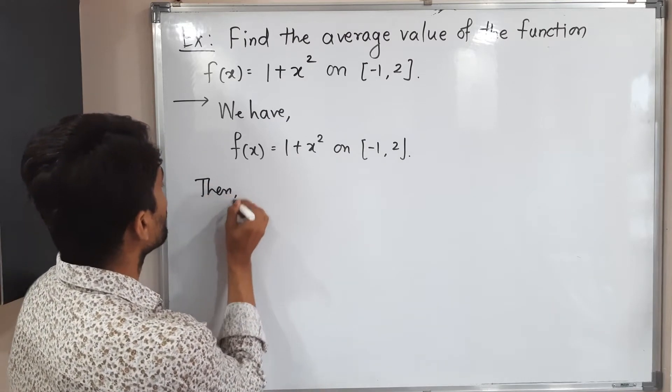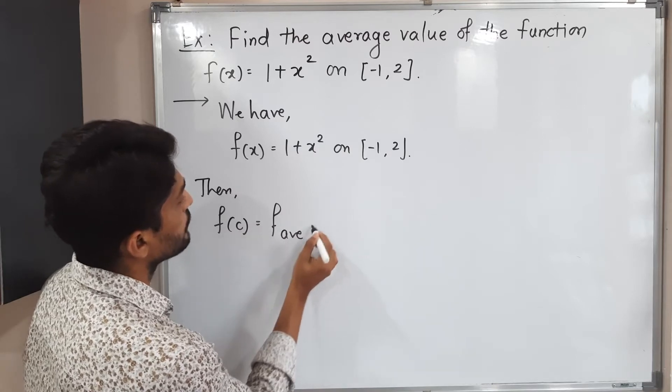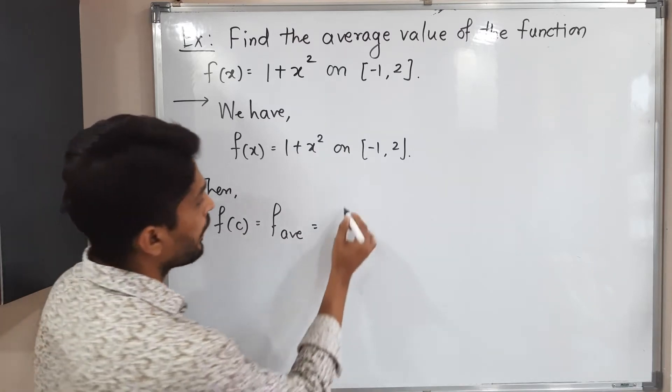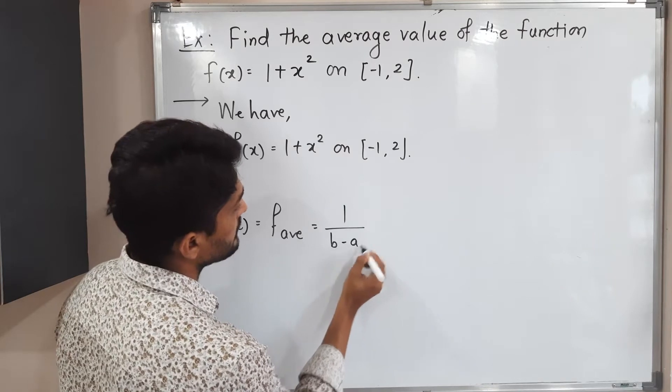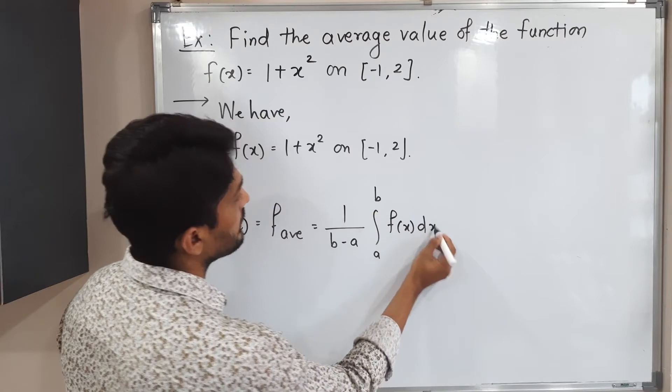What is the formula? f average equals 1 upon b minus a, integration a to b, f(x) dx.